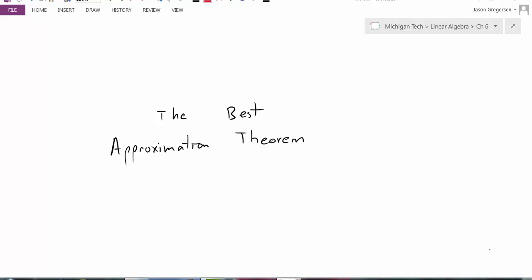Hello everyone, my name is Jason Gregerson. In this video we're going to talk about the best approximation theorem. Specifically, the best approximation theorem helps us characterize or describe one of the key properties of our orthogonal projection. We're going to talk about that orthogonal projection being the best approximation to another vector from a subspace. Let's look at the details.